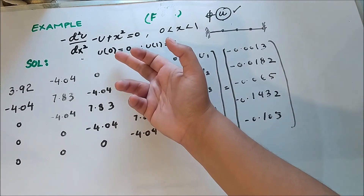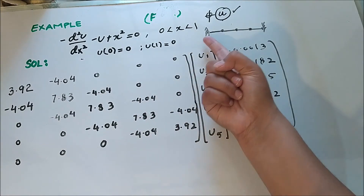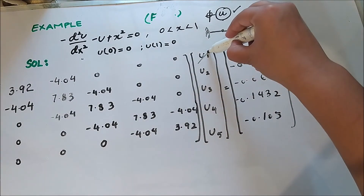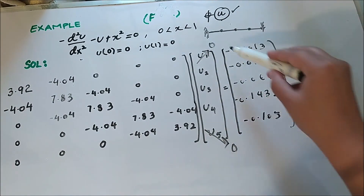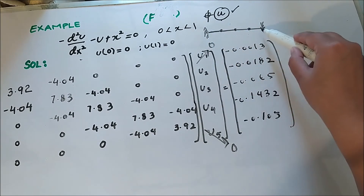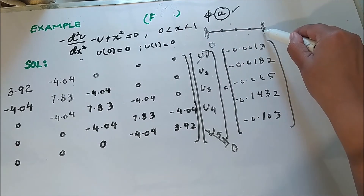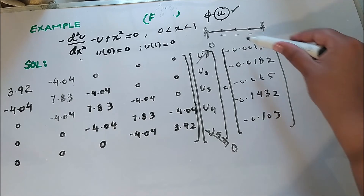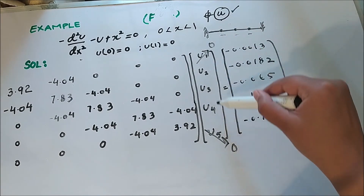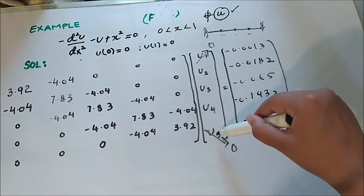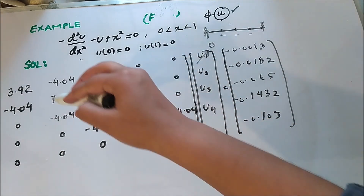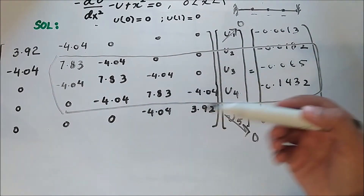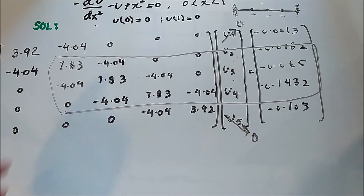Now we apply the boundary conditions: the displacement at the first end equals zero and at the other end also equals zero, meaning U1 = 0 and U5 = 0. Since the rod is fixed at both ends, there is no displacement there, and the displacements occur only at nodes U2, U3, and U4. Plugging zeros at the ends, we have three unknowns and three equations to solve.